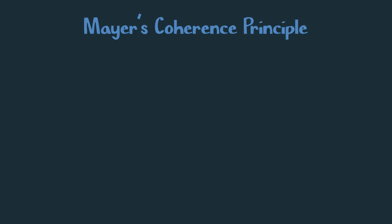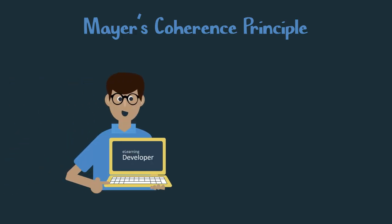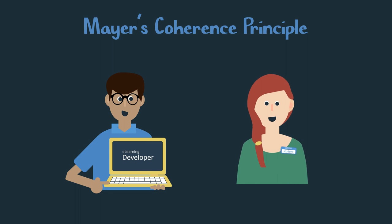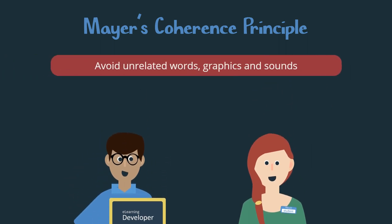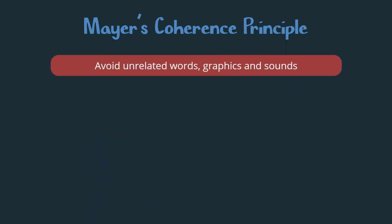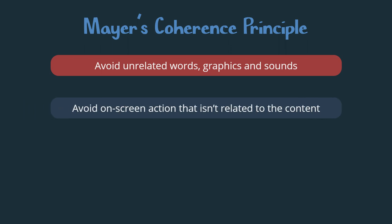The coherence principle helps developers avoid overwhelming the learner with clutter — like unrelated words, graphics, and sounds. It teaches us to avoid any on-screen action that isn't related to the content.